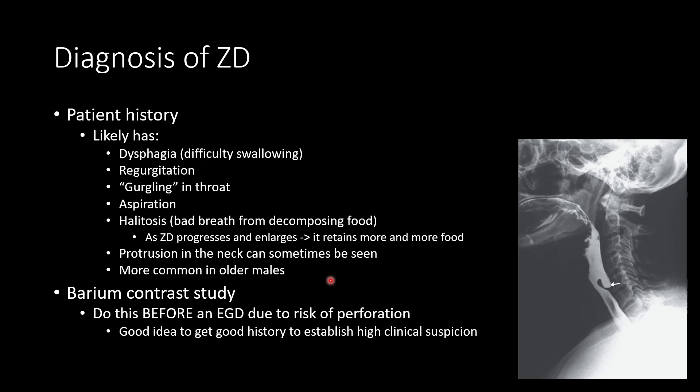Diagnosis of Zenker's Diverticulum is usually going to be based on your patient history before you go into any kind of imaging. In a vignette or when working up a patient with difficulty swallowing, the patient will complain about gurgling in their throat. They may talk about regurgitating foods or liquids, aspiration where food goes down the trachea instead, and halitosis — bad breath — because food stuck in the pouch decomposes.